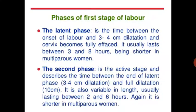The first stage has two phases: the latent phase, which lasts from onset of labor until the cervix is 3 to 4 cm dilated and fully effaced, usually lasting 3 to 8 hours and shorter in multiparous women. During the latent phase, regular rhythmic contractions start and the cervix dilates to 3 to 4 cm.